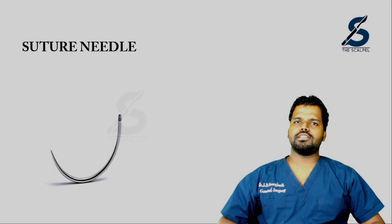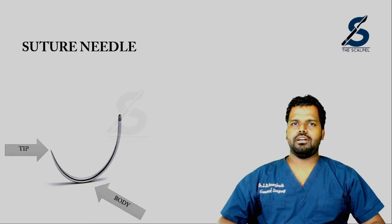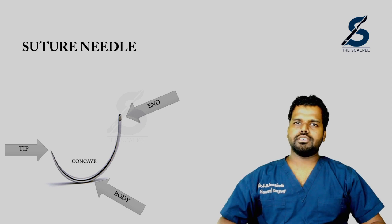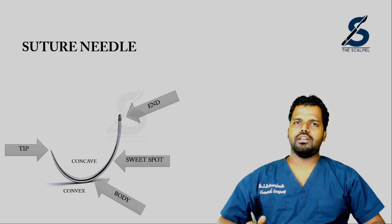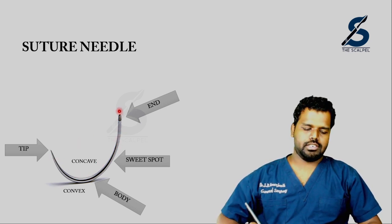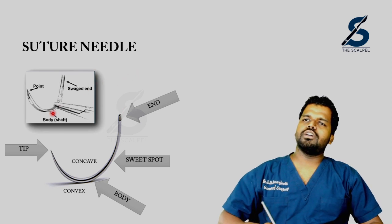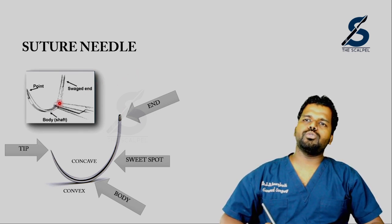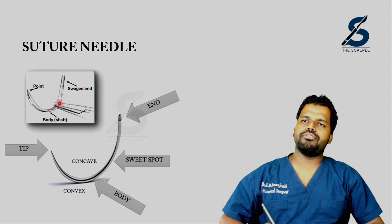We will start by discussing the parts of the suture needle. It has three parts: the tip, body, and the tail end. It has two surfaces — a concave surface and a convex surface. You also need to know the sweet spot of the suture needle, which is the junction of two-thirds and one-third of the needle. This is where you hold it with a needle holder, and always use the tip of your needle holder to hold the needle.